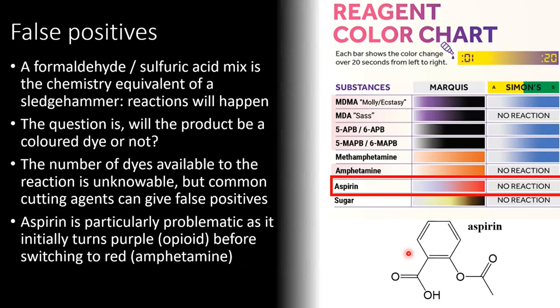To quickly talk about false positives — a formaldehyde-acid mixture is the chemistry equivalent of a sledgehammer; things are going to react. The question of the test is whether the products of the reaction are going to be coloured or not. Given Marquee reagent is going to react with whatever you put in it, the number of dyes it could produce is unknowable. There have been a number of tests on common cutting reagents, and aspirin is particularly problematic. If you add Marquee reagent to a sample of aspirin, you first get a purple colouration forming after about 10 seconds — very similar to the result for opioids — and then over time it transitions into red, which is the result you would expect for amphetamines. This creates uncertainty whenever aspirin is used as a cutting agent.